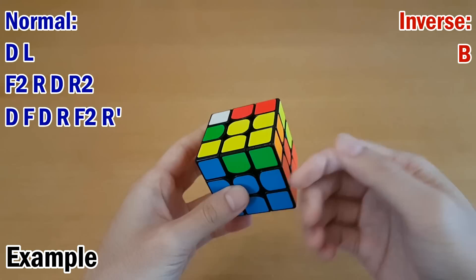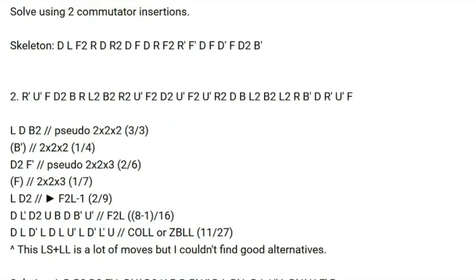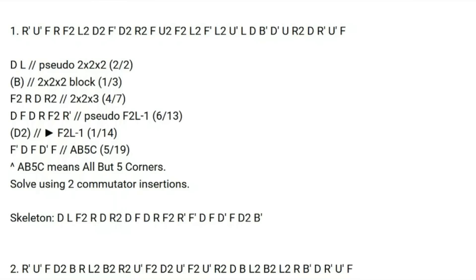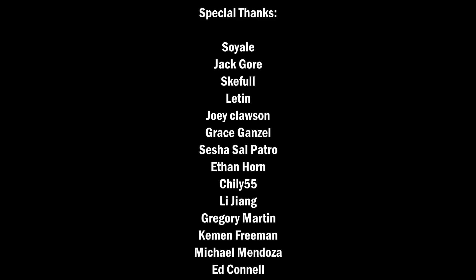That leads to a 14-move f2l-1. In the description, I have an example that is a 9-move f2l-1, and obviously there was some luck involved, but the only reason that was possible was because of pseudo blocks. And for some of them, I show further continuations for a full skeleton, which I'll be talking about in a later video — that's the best way to end your fewest moves solve. Thanks for watching, and I'll see you guys next time.